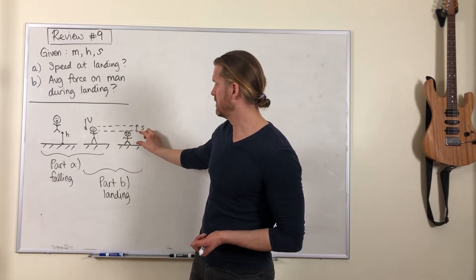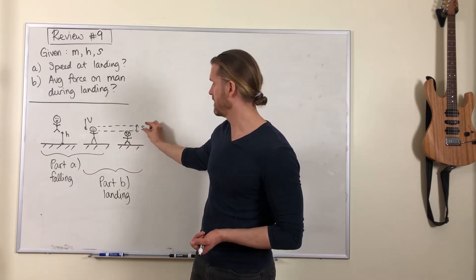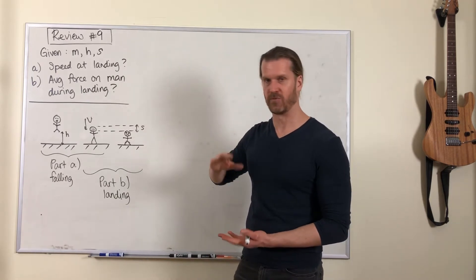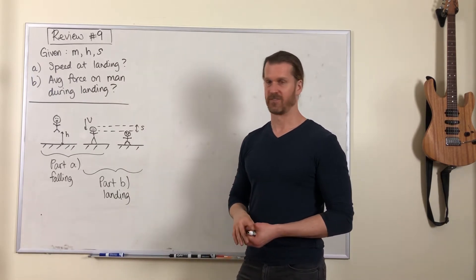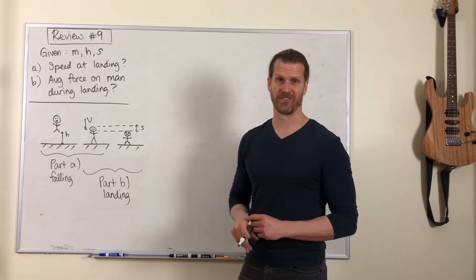Part b is this landing process where he comes to a stop, from the moment his feet first touch the ground to when he's completely stopped. He's compressed and moved down by this distance s, which is a small distance in this example.